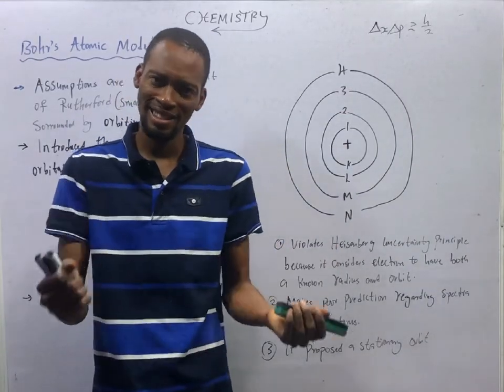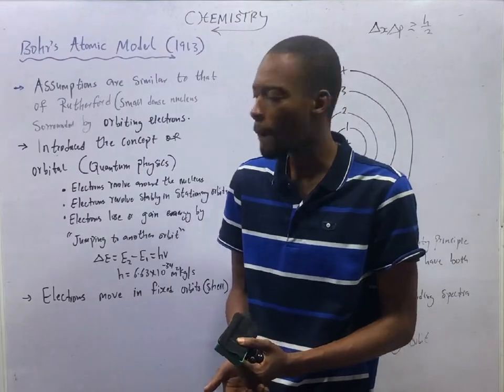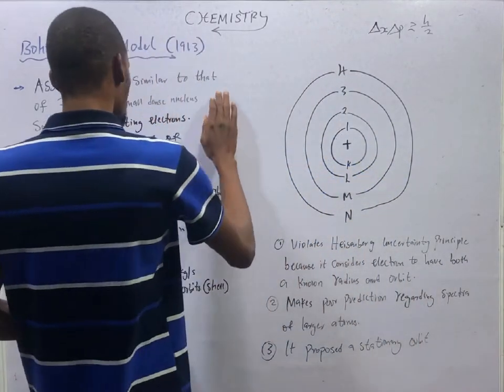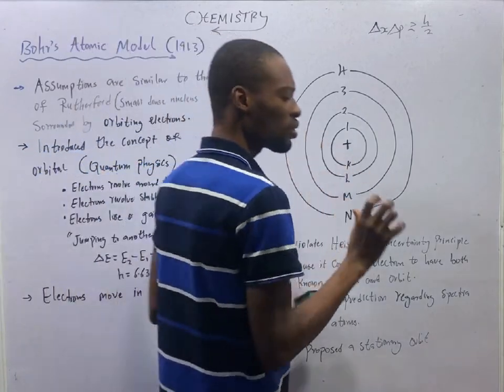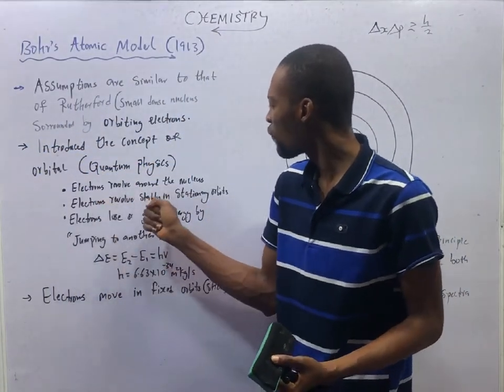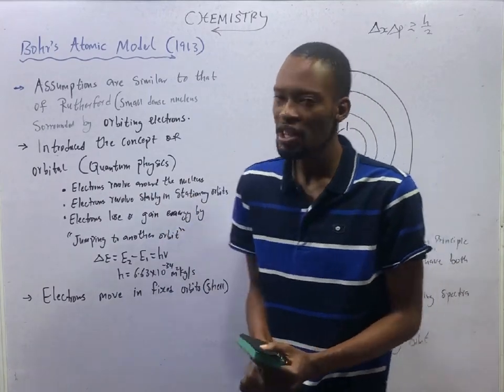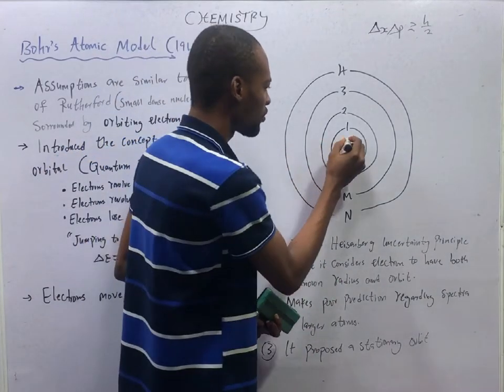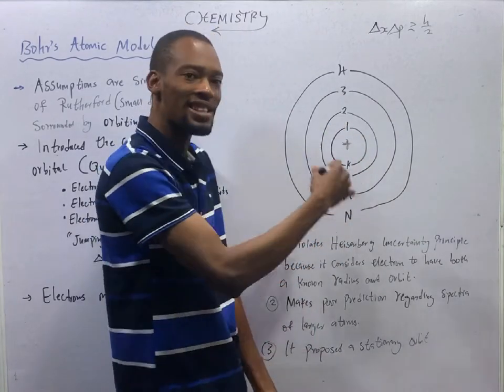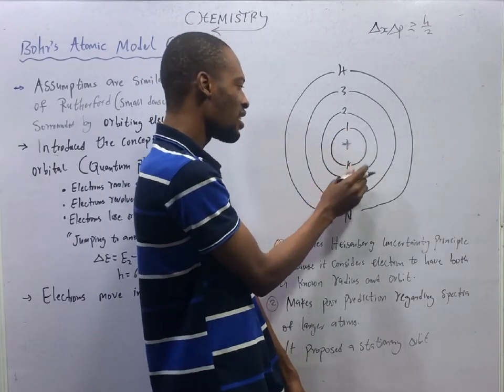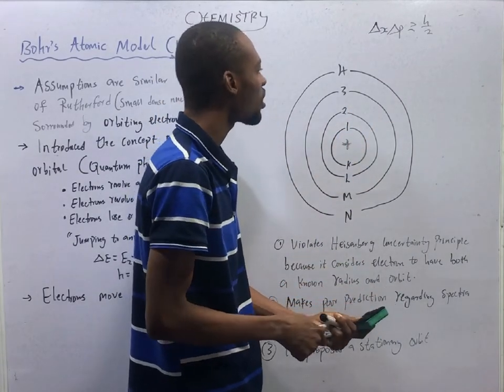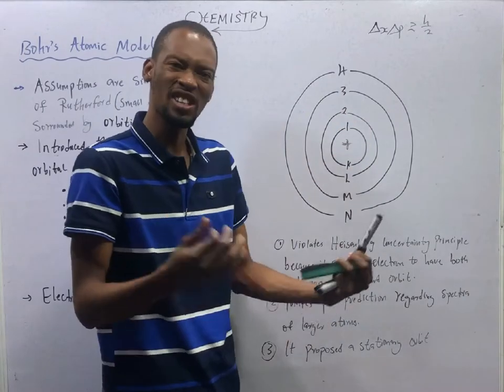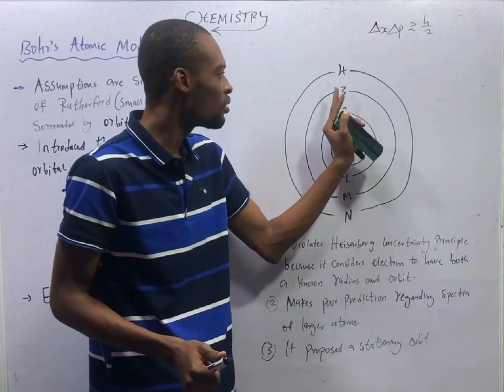According to Bohr, electrons revolve around the nucleus just like Rutherford told us. However, electrons revolve stably in stationary orbits. He proposed the concept of orbits and shells. He said if this is an atom and this is the nucleus, the small dense nucleus, we have shells around the nucleus. This is the first shell called K shell, the next shell is called L shell, the third shell is M, and the fourth shell is N, and so on. So all these shells are referred to as quantum numbers and their whole numbers 1, 2, 3, and 4.